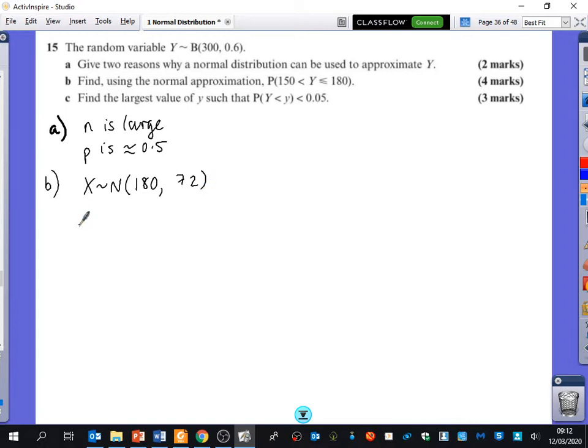And we were trying to find the probability that y was greater than 150 and less than 180. So when we do the continuity correction, it should be 150.5 and it should be 180.5. And then when you put that into your calculator, I believe you should get 0.5232.